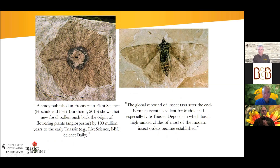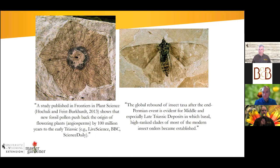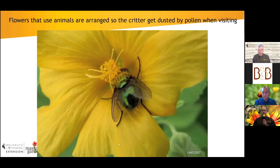In the fossil record you can see insects like a butterfly where you can actually see the pattern on the wings — very similar to species still around today. Here's a flower going back to their origin. This is also why insects became so diverse: as plants diversified, insects that could pollinate or feed on those plants also followed suit. The flowers that use animals are generally arranged physically so the critter — in this case a green bottle fly — gets dusted with pollen when visiting.